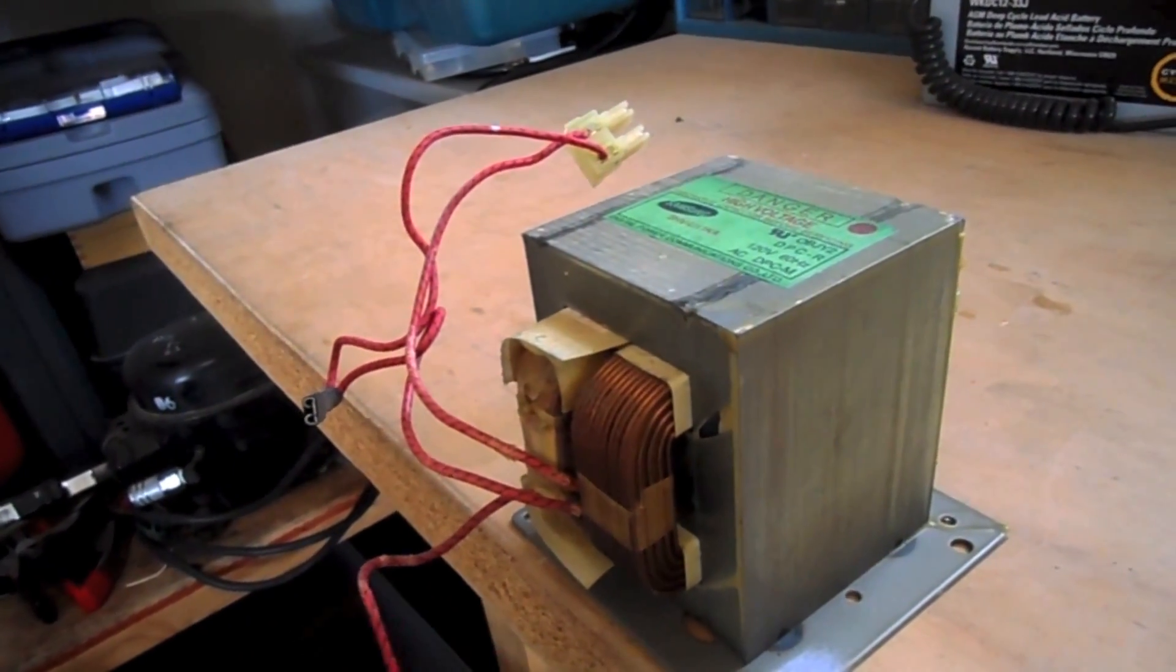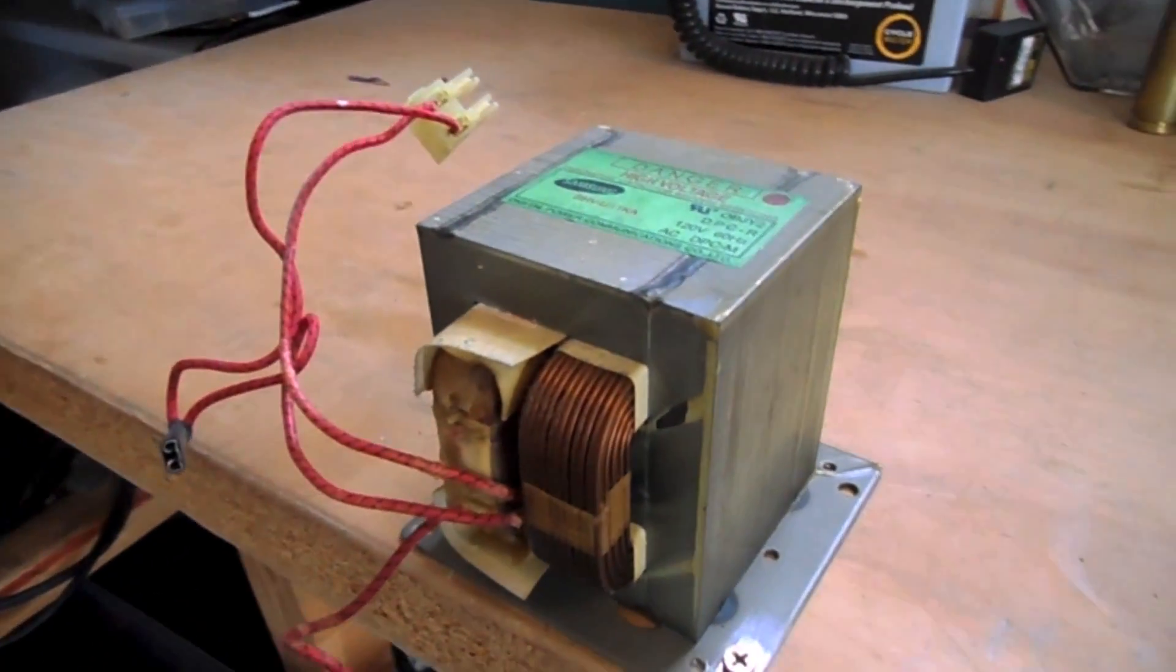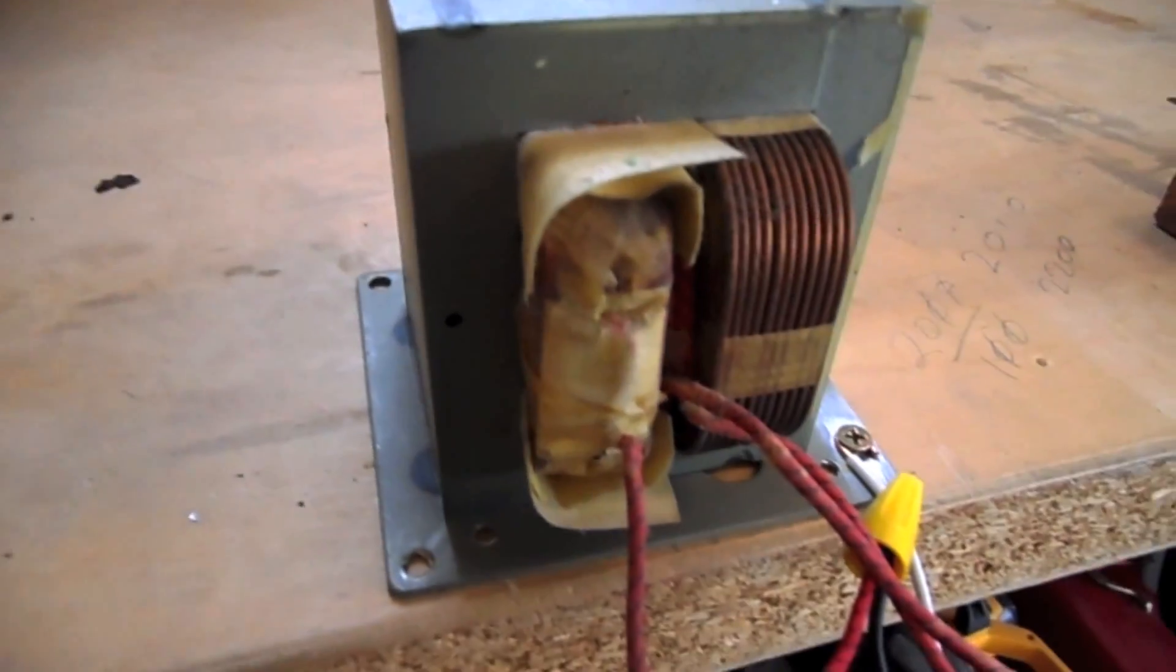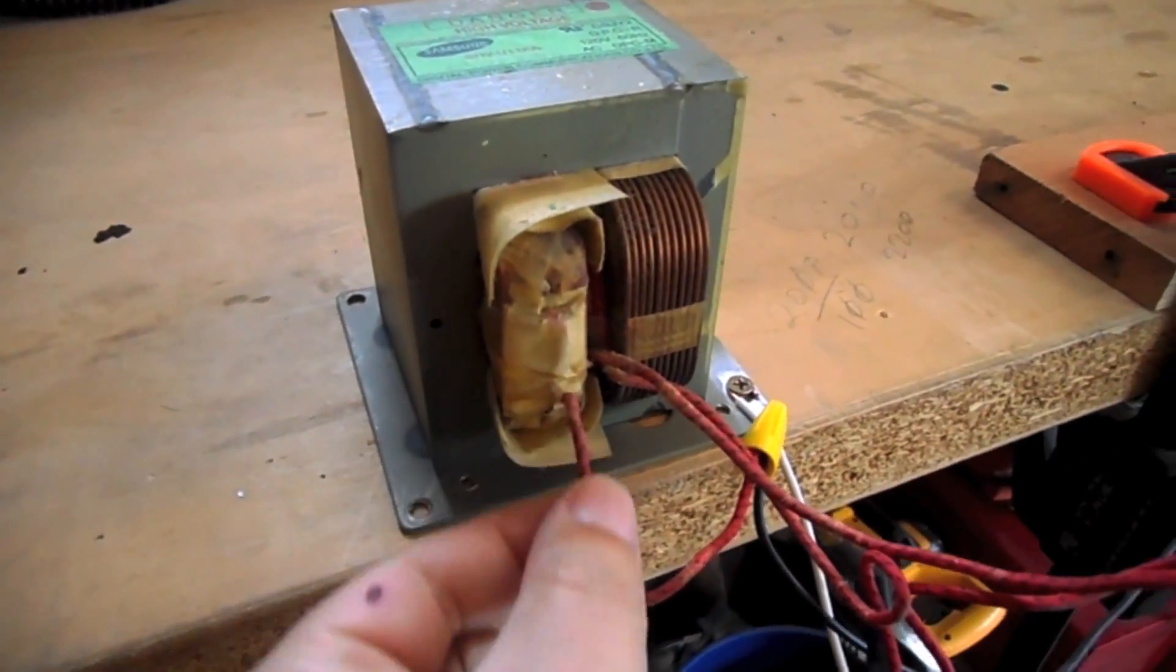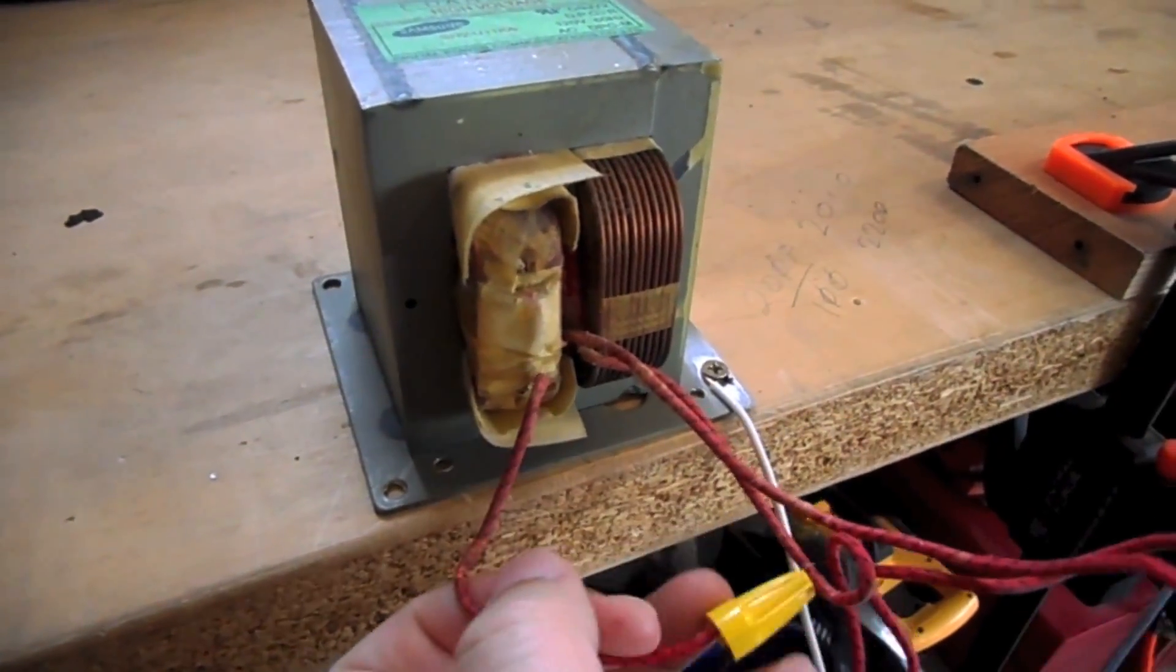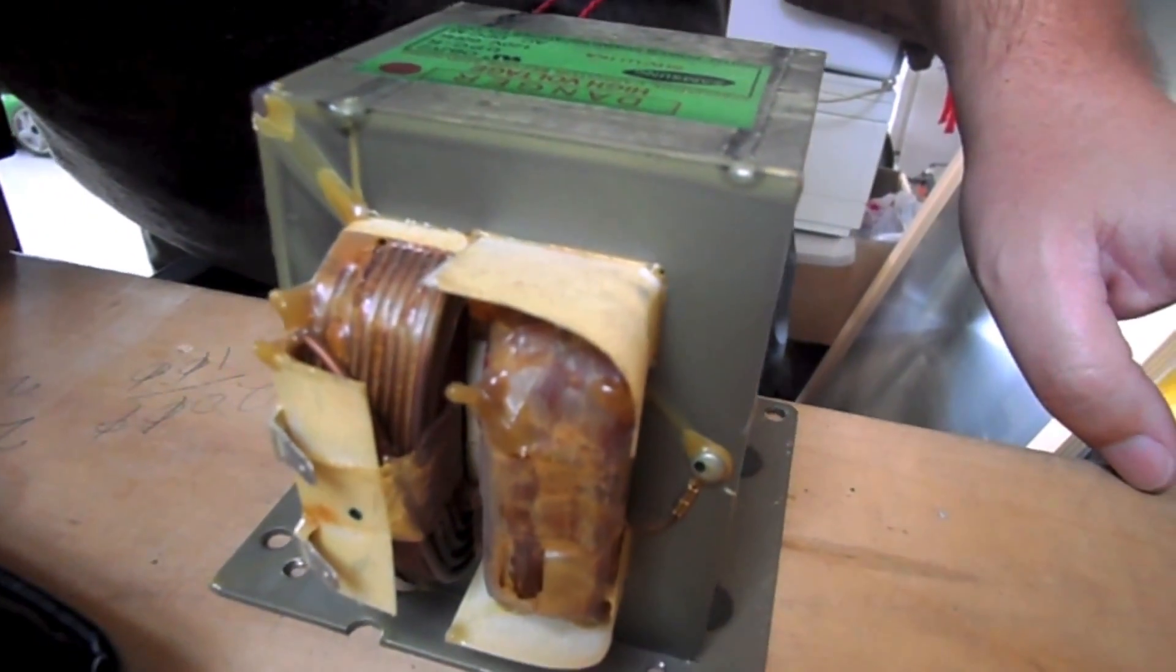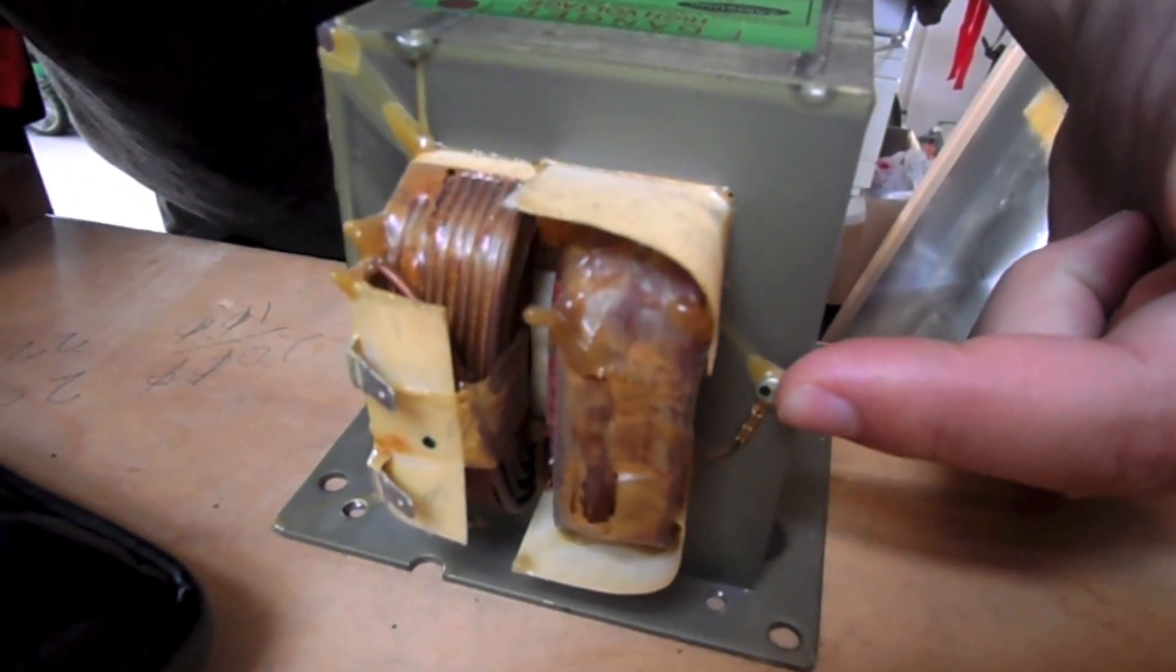The primary winding is this thicker wire. The secondary winding is made up of many more wraps of very fine wire. The wires from the secondary winding come out the front here, and in the back it's attached to the transformer itself.